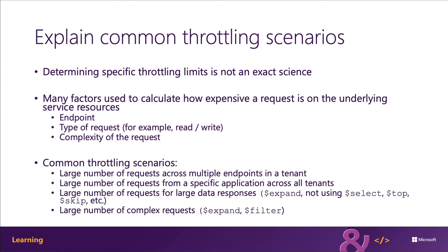A large number of requests across multiple endpoints in a tenant, or a large number of requests from a specific application across all tenants, can trigger throttling. Another scenario is a large number of requests for large data responses. Consider a request that uses the $expand query operator — it tells Microsoft Graph to get additional data and include it in the response. If the request isn't using data-limiting query parameters such as $select, $top, or $skip, the service must work harder to retrieve and include larger data sets in the response.